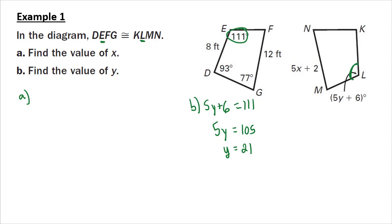Now part A. I have side MN, which is congruent to side FG. So 5x plus 2 equals side FG, which is 12. So 5x equals 10 if I subtract 2. I'm sorry, I'm distracted because I have something wrong in my notes. X equals 2.